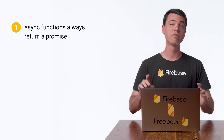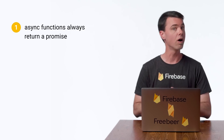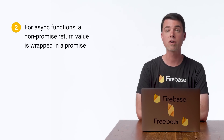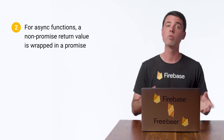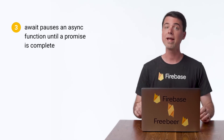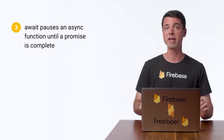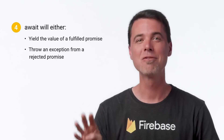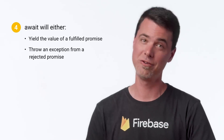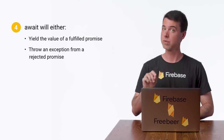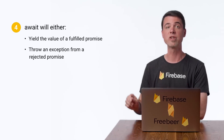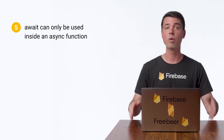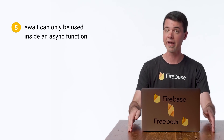Here's a summary of what you need to know about async/await. First, functions marked with the async keyword always return a promise. Second, if the return value from inside an async function is not a promise, it'll be wrapped in one that resolves immediately. Third, the await keyword will pause the execution of an async function until a promise is complete. Fourth, await will either give you the result from a fulfilled promise or throw an exception from a rejected promise. Fifth and last, await is only valid for use inside an async function.